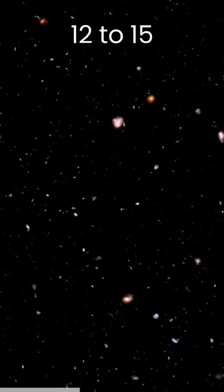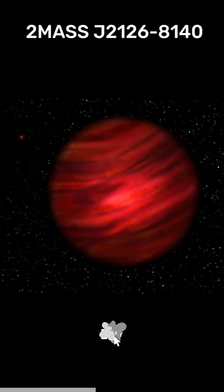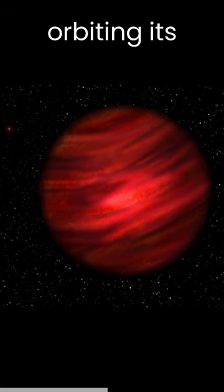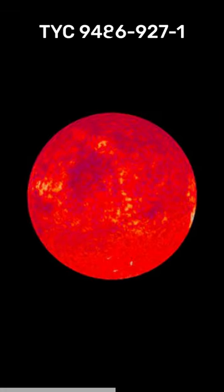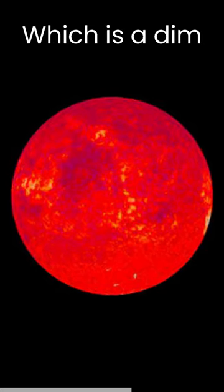There is a planet that is 12 to 15 times more massive than Jupiter called 2MASS J2126-8140, orbiting its host star named TYC 9486-927-1, which is a dim red dwarf star.